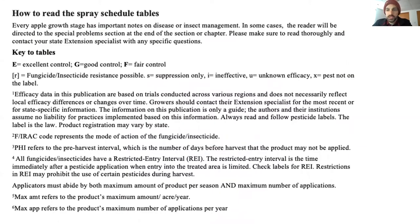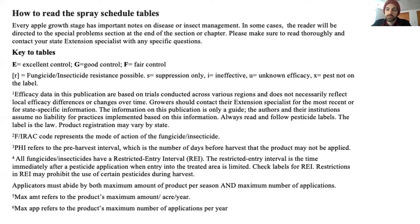As we've gone through and made changes to the Apple chapter, we've really updated all of the efficacy information. You'll see that E is labeled for excellent, G for good, F for fair, R in a small bracket means there's possible fungicide or insecticide resistance to be worried about, I means it doesn't work, U means we don't have enough information to share, and X in the tables means it's not labeled for that particular pest.